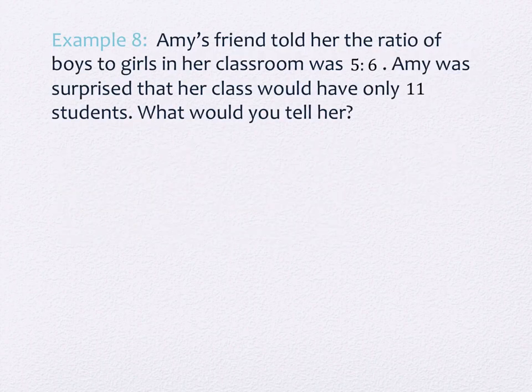Good. Alright. Example 8. Amy's friend told her that the ratio of boys to girls in her classroom was 5 to 6. Amy was surprised that her class would have only 11 students. What would you tell her? Let's start with, where is she getting 11 students? Yeah, she's adding the 5 and the 6. So the way that this is set up, it's boys to girls. So we're looking at 5 boys and 6 girls, the way that the ratio is set up. So if we added the 5 and the 6, we'd get 11. Okay. So first, could there be 11 students?